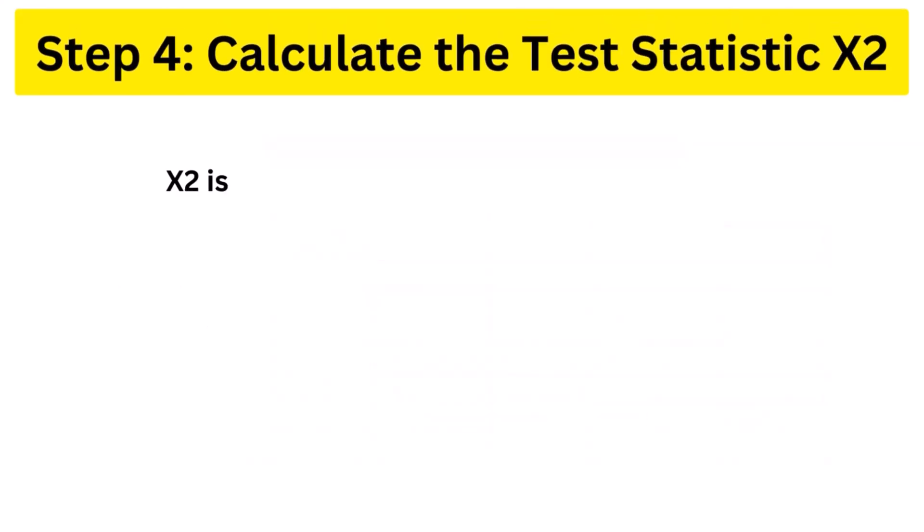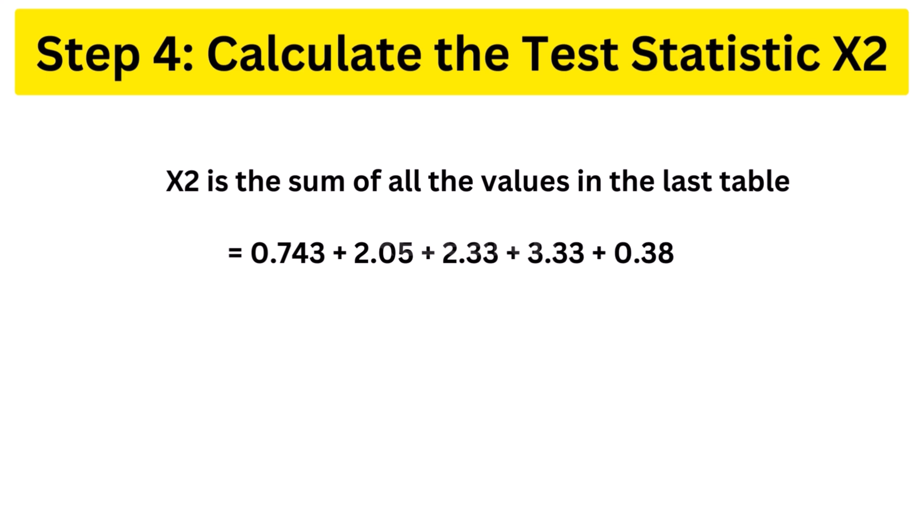Step 4, calculate the test statistic x2. x2 is the sum of all the values in the last table. Equals 0.743 plus 2.05 plus 2.33 plus 3.33 plus 0.384 plus 1. Equals 9.837.